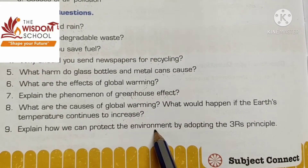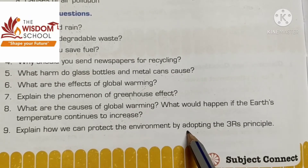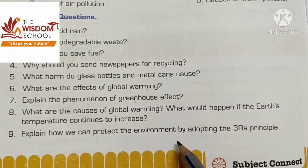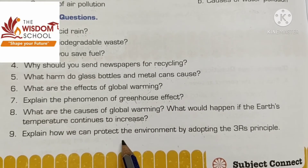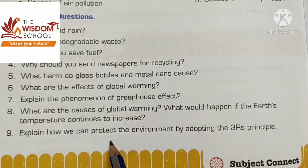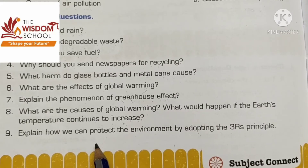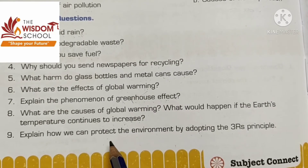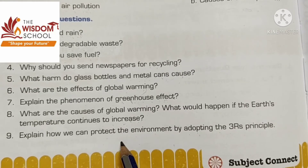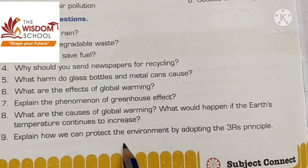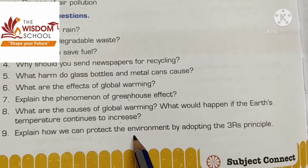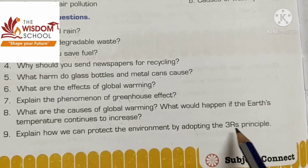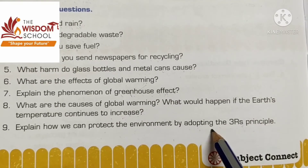How can we protect the environment by adopting the three R's principle? The three R's are reduce, reuse, and recycle. We must reduce our needs and not buy things we do not need. We must buy things which can be used again and again over a long period of time, and avoid disposable things which we throw away after every use.